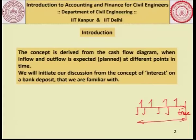We will initiate our discussion from the concept of interest on a bank deposit. If we deposit 100 rupees in the bank, at the end of 1 year the bank may give us 105, 107, or 109 depending on the rate of interest applicable. Similarly, when we take a house loan or car loan and those loans have to be repaid, what we pay back to the bank is not 100 rupees — it is a little more than 100 rupees — and that is something we need to understand before we get started with our discussion on financing.